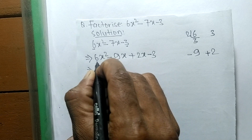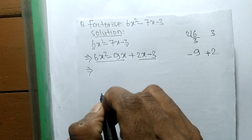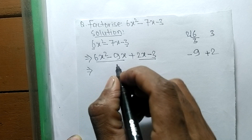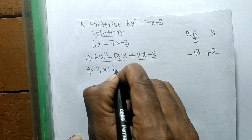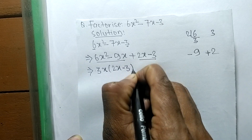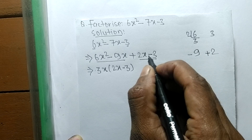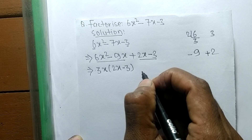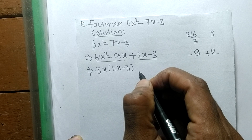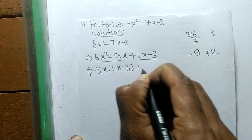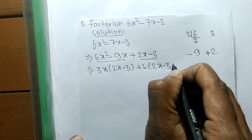The first pair is 6x² and minus 9x, and the second pair is plus 2x and minus 3. In the first pair, the common factor is 3x, so the remaining is 2x minus 3. In the second pair, there is nothing common, so the common becomes 1, and the remaining is also 2x minus 3.